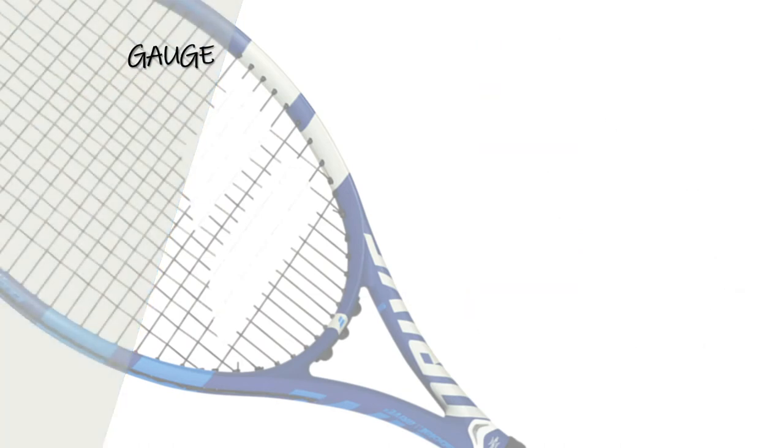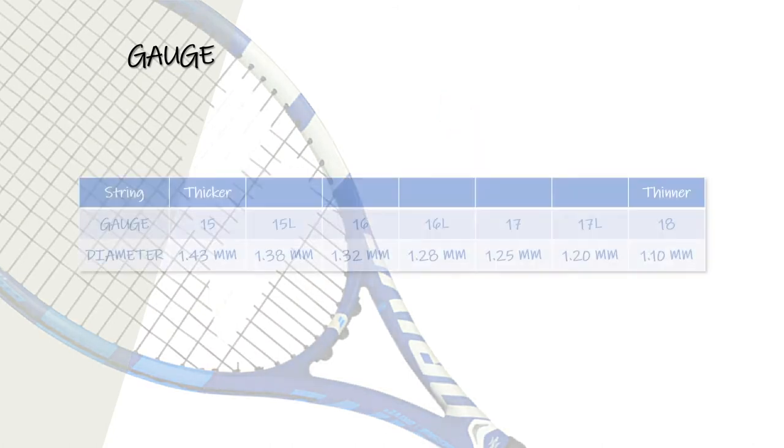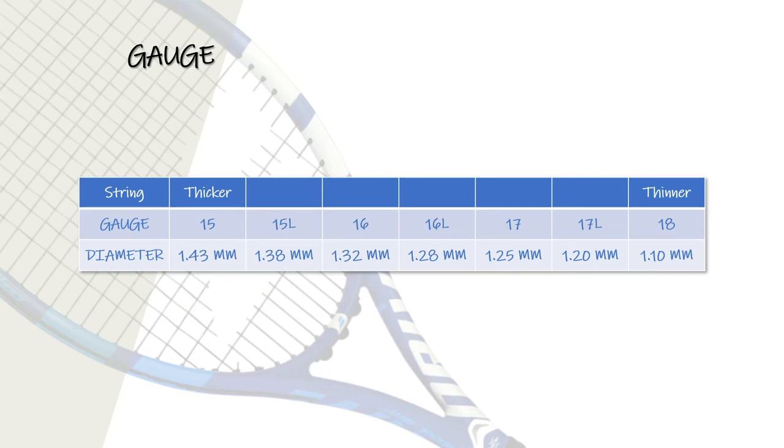Now let's move on to the gauge. The gauge is the diameter of the string and can vary in tennis between 15 and 18 in American measurement, or from 1.43 mm to 1.10 mm in international measurement, with half points identified by the letter L in the American measurement. What you need to remember is that the lower the number, the thicker the string. A 15L gauge will be thinner than a 15, but thicker than a 16 gauge.